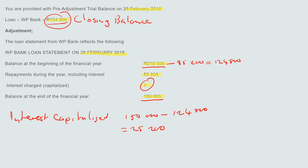Just be careful — you rather say: beginning balance ($210,000) minus repayments ($85,200), then subtract the closing balance. This will give you the same amount. So just make sure you read and understand what the question is saying.